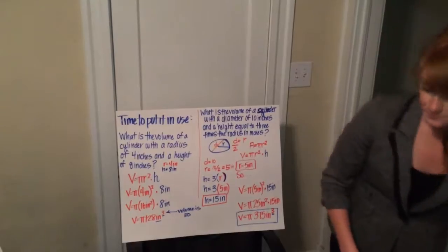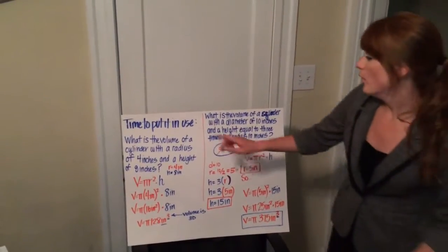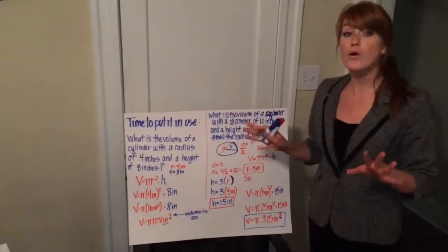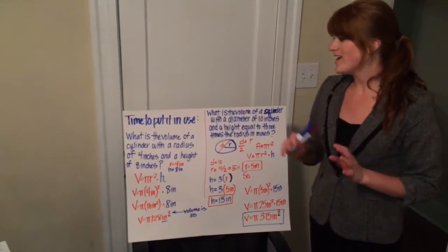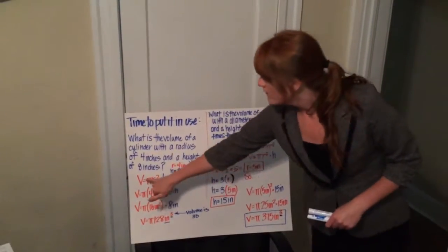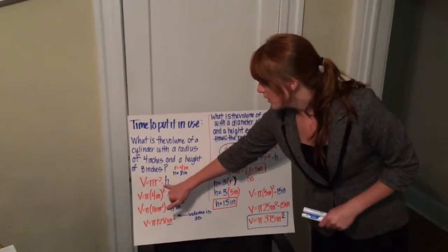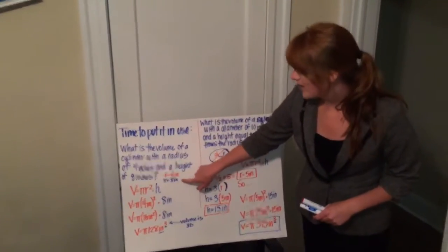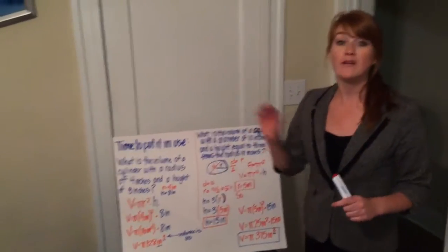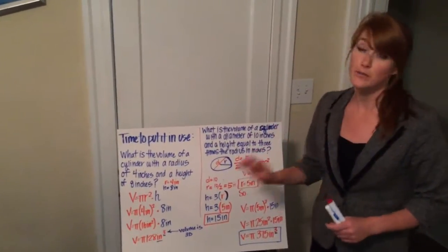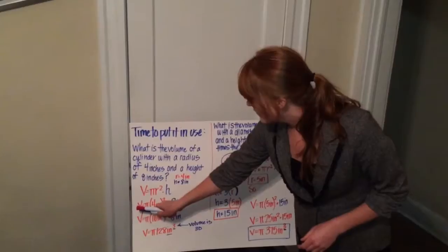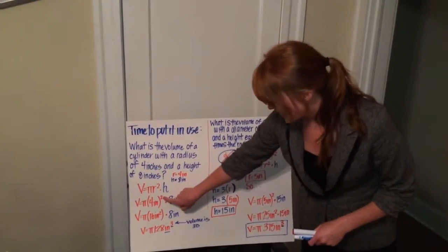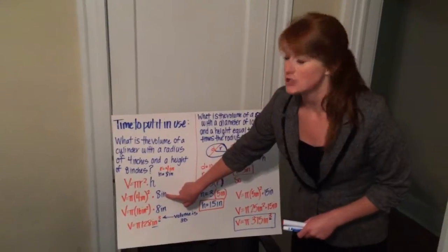Let's do a problem. What is the volume of a cylinder with a radius of 4 inches and a height of 8 inches? Volume is equal to pi r squared times height. Our radius is 4 inches and our height is 8 inches. Make sure you bring along those units, because that's very important. So we have volume equals pi times 4 inches squared, which is our radius, times 8 inches, our height.